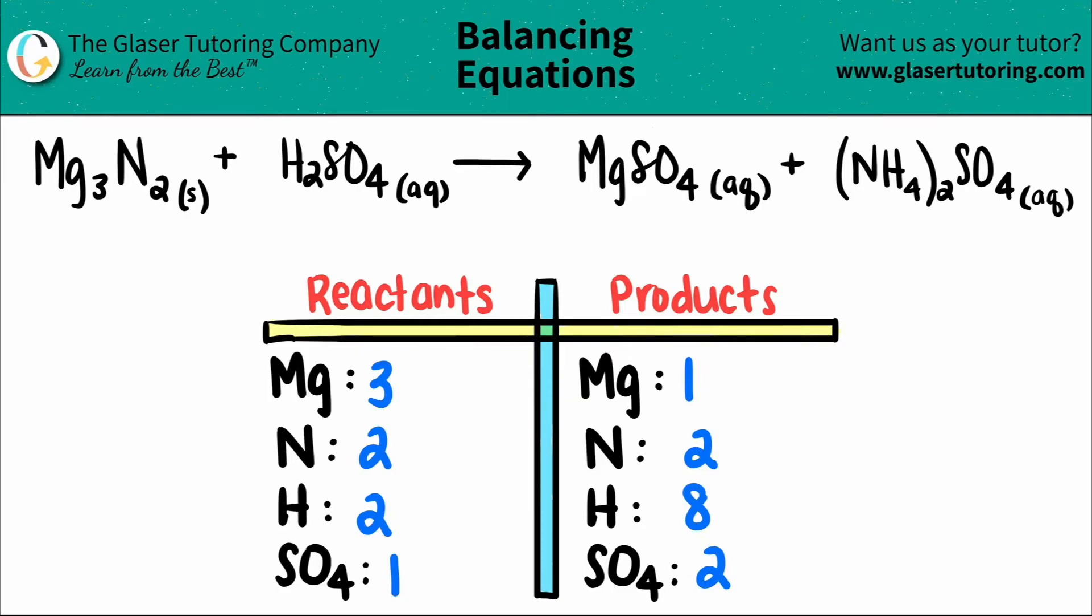Now I try to just balance one element at a time. It does not matter which one you choose first, but just choose the one that looks the easiest to balance. Maybe what I will do is I will balance the magnesiums. So I see that I have three on the left side and I have one on the product side, so you're always going to want to get the lower number and get it to the higher number by multiplication.